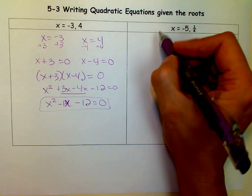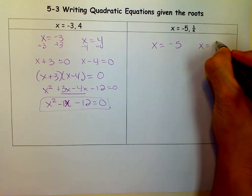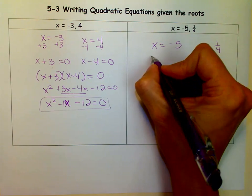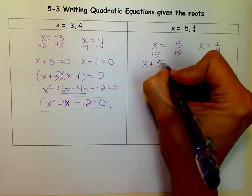So let's try this one. Again, we'd have x equals negative 5 and x equals 1 fourth. To move things to this side, we just add 5 to both sides, and we get x plus 5 equals 0.